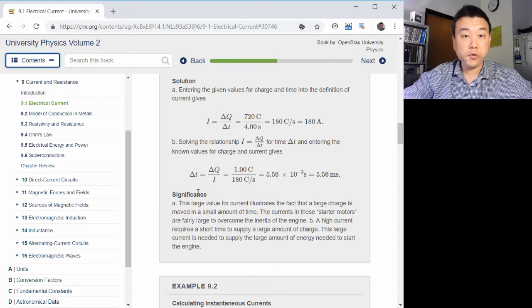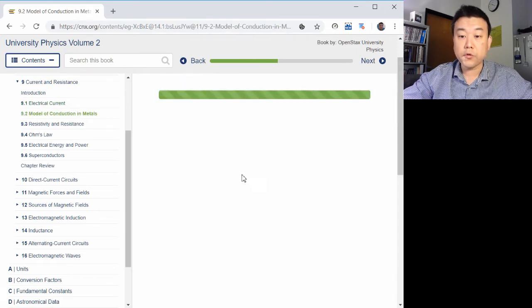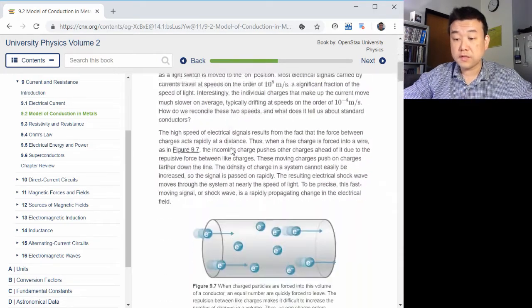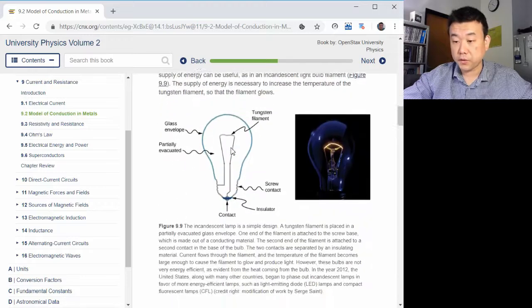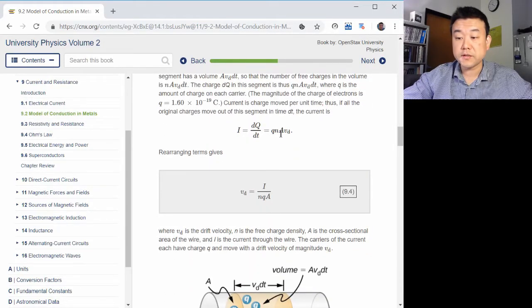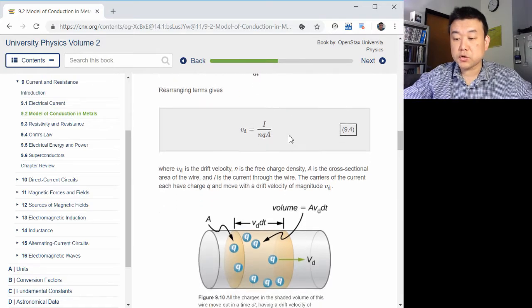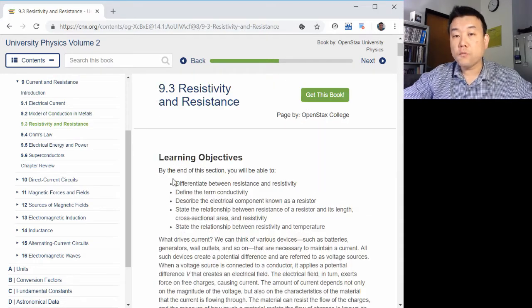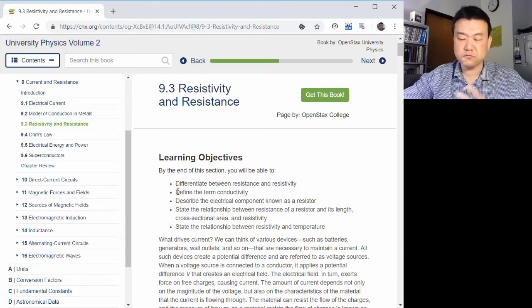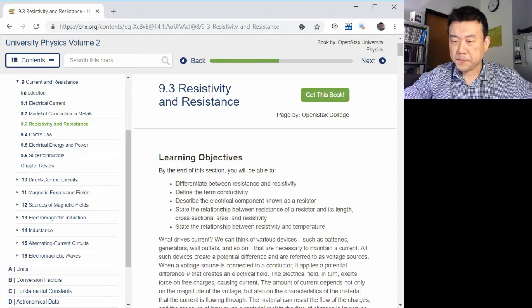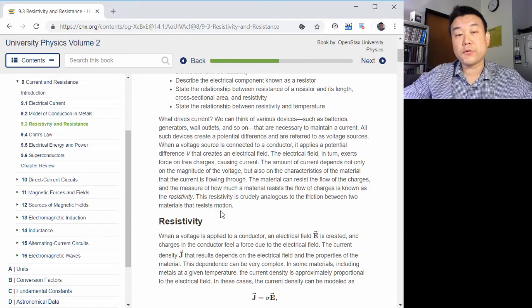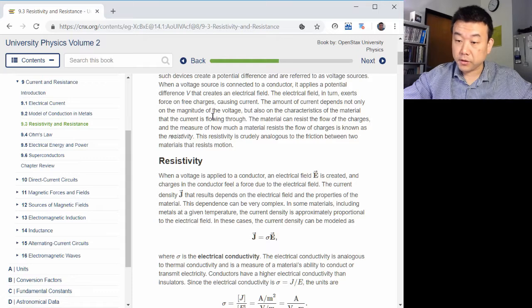The other important conceptual idea is model of conduction in metals. I won't really test you on some of these materials, like how the current flow is expressed in terms of charge density and drift velocity. But the way in which this is useful is in helping you understand Ohm's law later. Now Ohm's law is what defines resistance and resistivity. I actually prefer to start from resistance and then work backwards to resistivity.